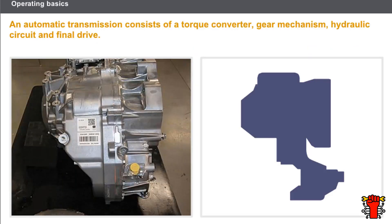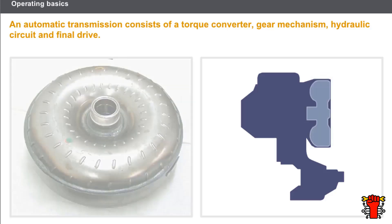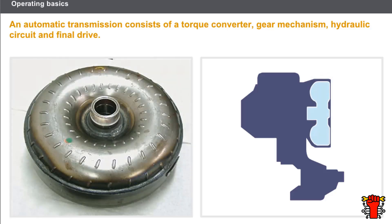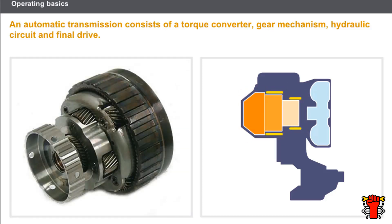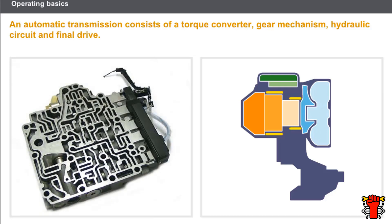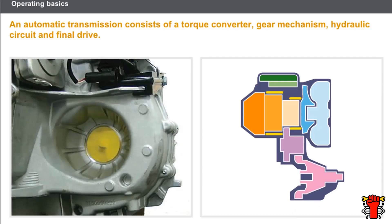Automatic transmission includes four main systems: the hydraulic torque converter, which connects the engine to the gearbox; the gear mechanism, which provides various ratios; the hydraulic circuit, which controls the servos and lubricates the system; and the final drive, which has the same function here as with a manual gearbox.